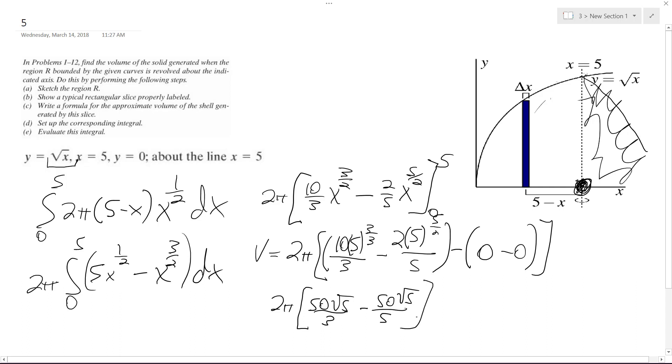And finally, when we simplify all this, I'll do one more step, so two pi and then twenty root five over three, and finally forty root five pi over three, and that's it.